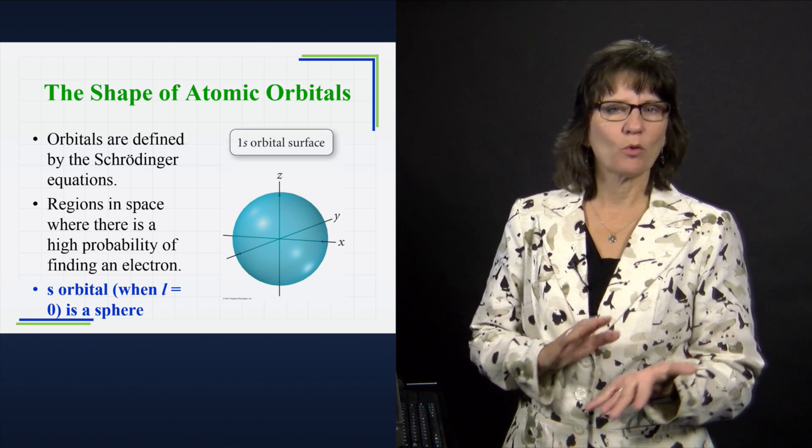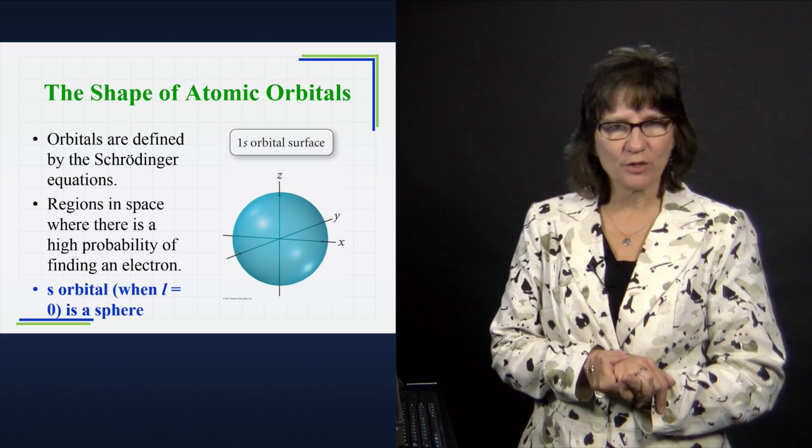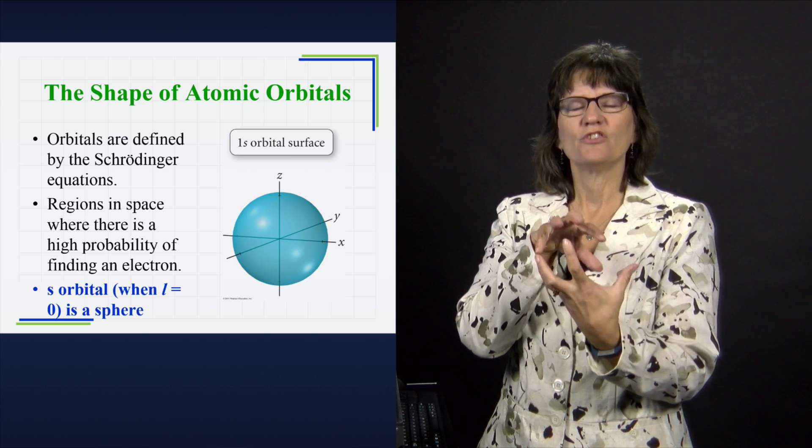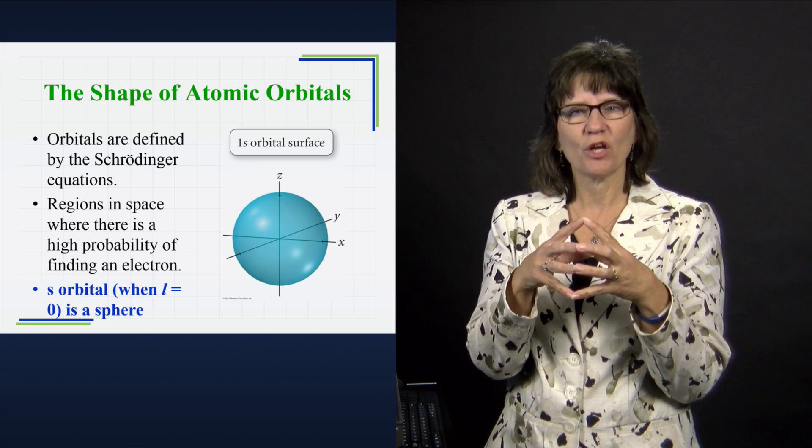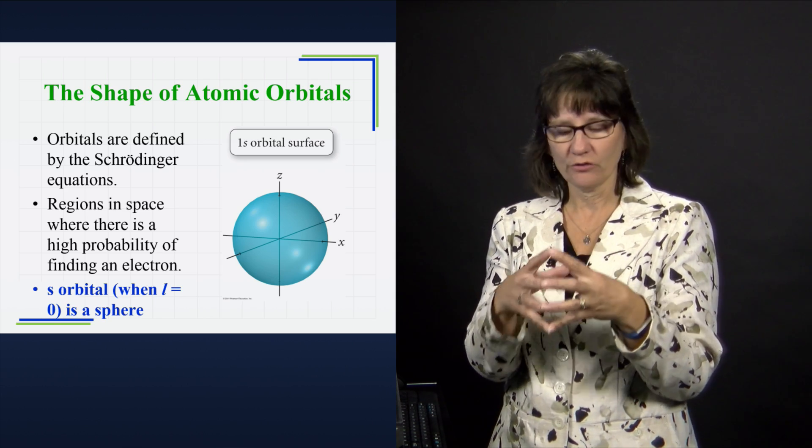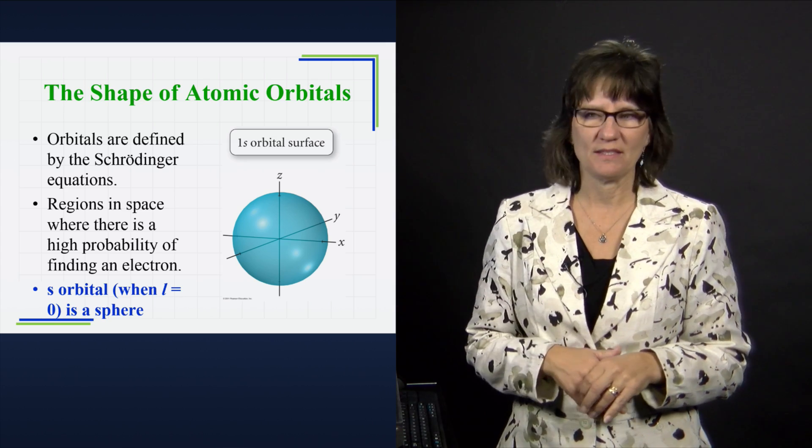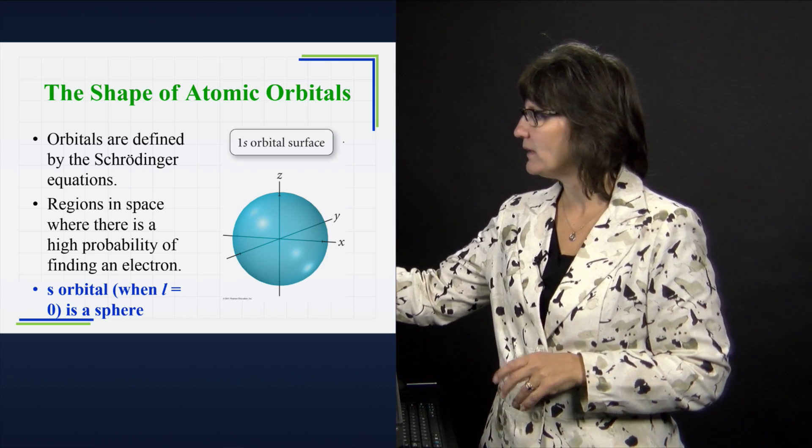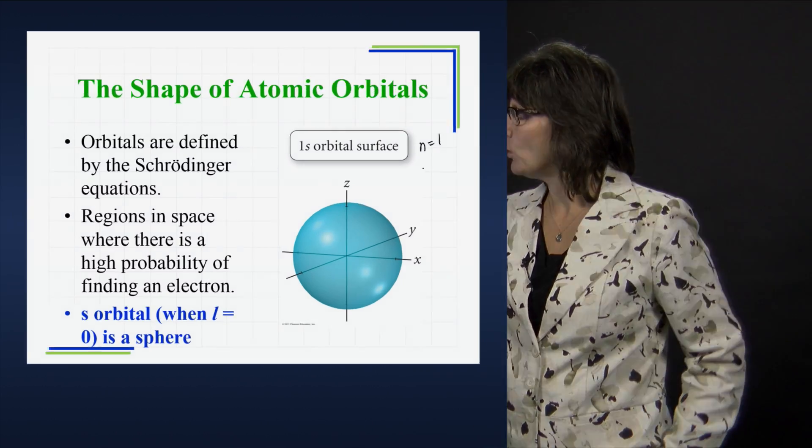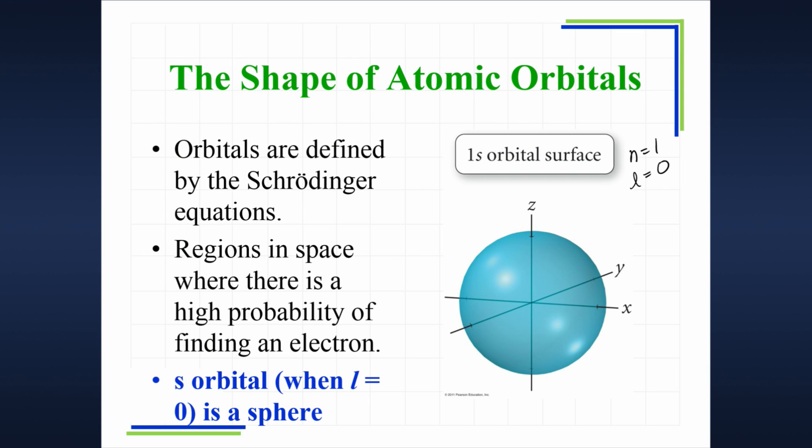So what is the S orbital? We know the value of L is equal to zero. That gives you the subshell called the S subshell. We know in that subshell there's only one orbital. That's when M sub L is also zero. And that's what we see here. With this being a one S orbital being depicted, N is equal to one, L is equal to zero, M sub L is also equal to zero. And an electron that has those three numbers lives in a space that looks like that shape right there.